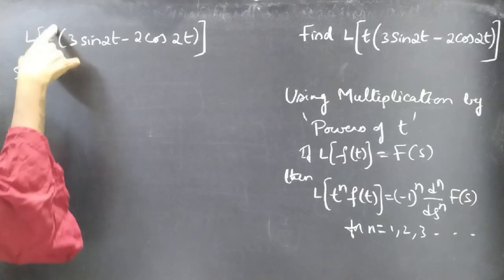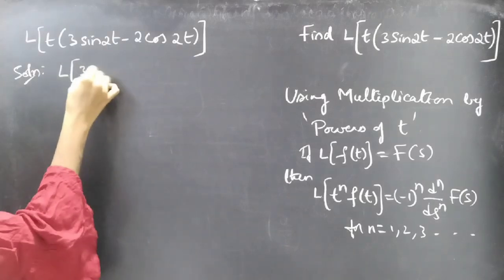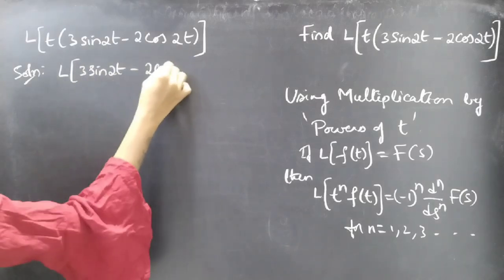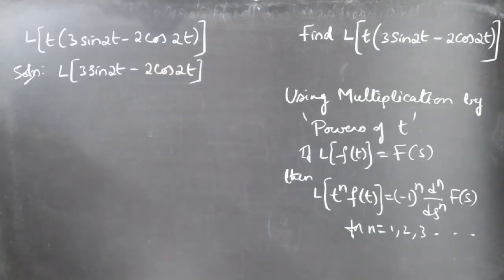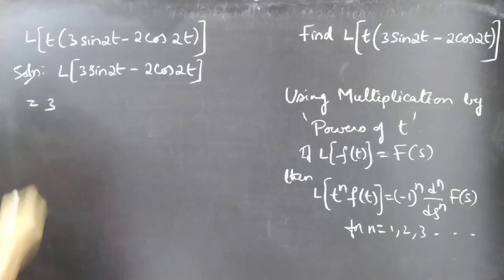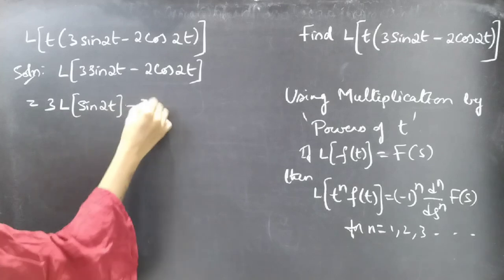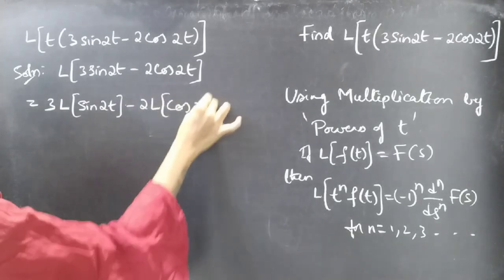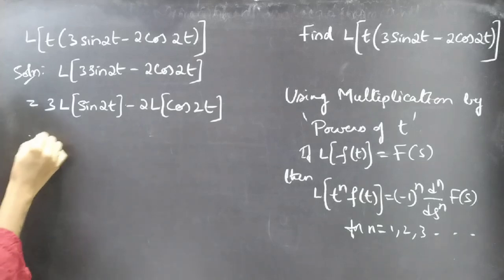Since multiplication by power of t is 1, we need to find L of f(t). Firstly we'll find L of 3 sin(2t) minus 2 cos(2t). By the linear property we'll get 3 times L of sin(2t) minus 2 times L of cos(2t).